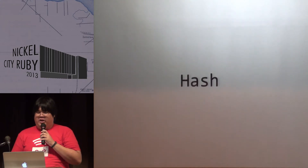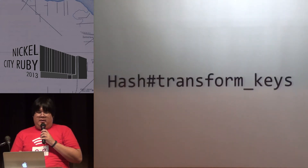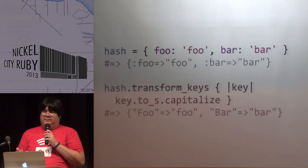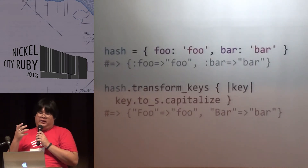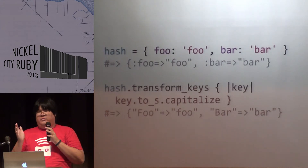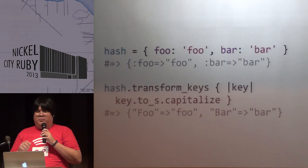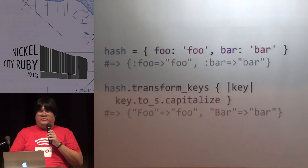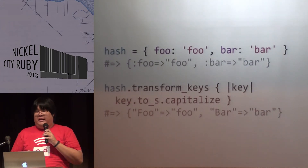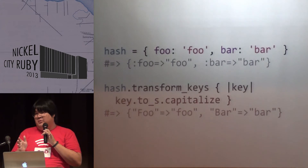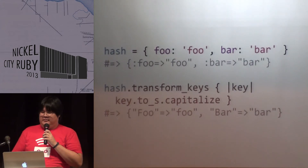Next up is hash. There's hash transform_keys, which you can pass a block to and it will convert all the keys. So in a case where you have to pass a hash to some API that requires all the keys to be capitalized, you can keep your original hash with symbols and then convert it later.